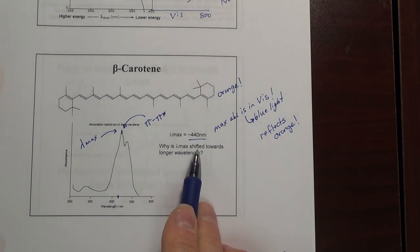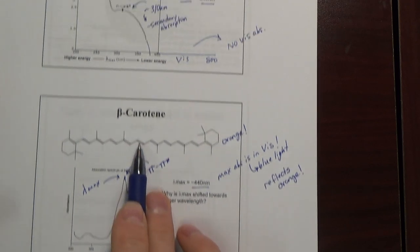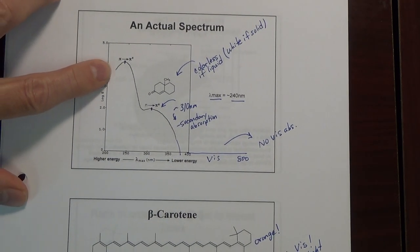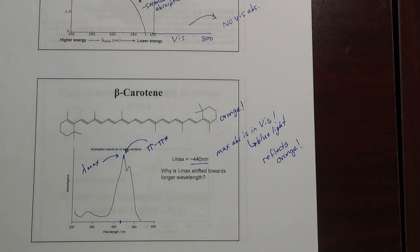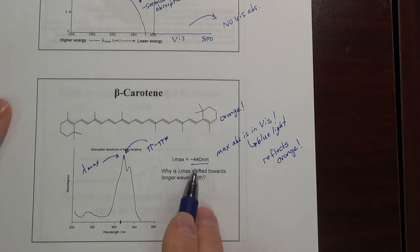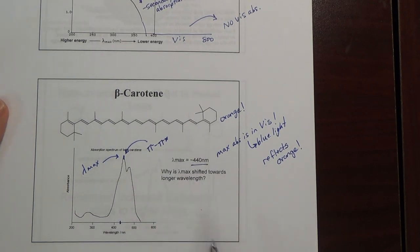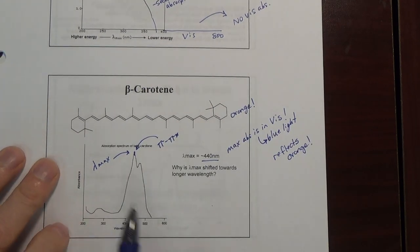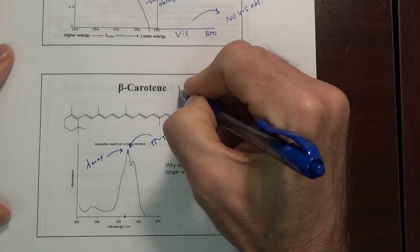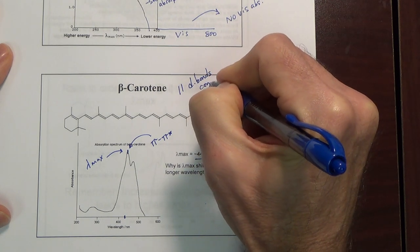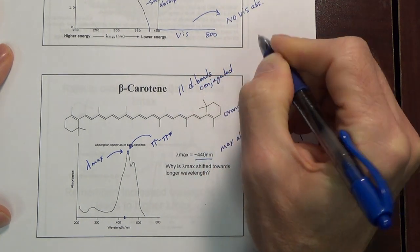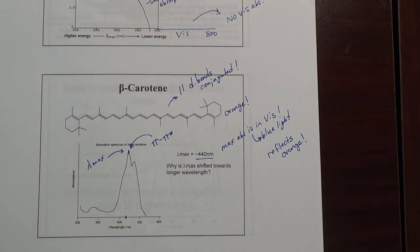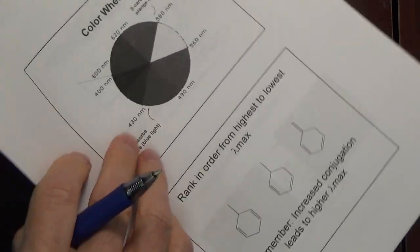The question we can ask is: why is the lambda max shifted towards longer wavelength in beta carotene — about 440 — as opposed to the molecule above, which was about 240? This is sometimes called a red shift — towards longer wavelength is a red shift; towards shorter wavelength would be a blue shift. The reason it's shifted is because of all the conjugation. If you look at this molecule, it has 11 double bonds conjugated — it's a polyene.